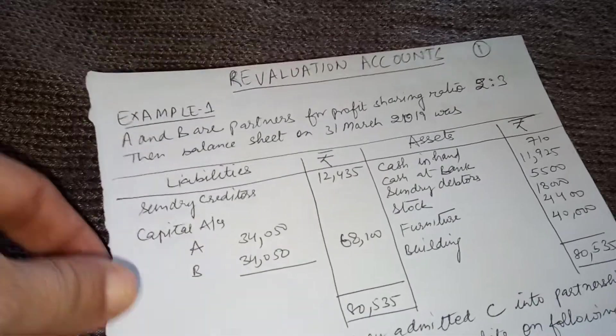The partners R and S have capitals of 30,000 and 25,000, giving a ratio of 6:5. A is admitted for one-fourth share. Remaining share = 1 − 1/4 = 3/4. R's new share = 6/11 × 3/4 = 18/44. S's new share = 5/11 × 3/4 = 15/44. A's share = 1/4 = 11/44. New profit sharing ratio of R:S:A = 18:15:11.